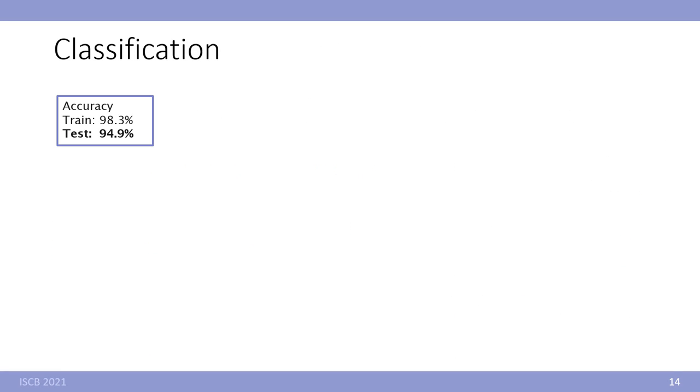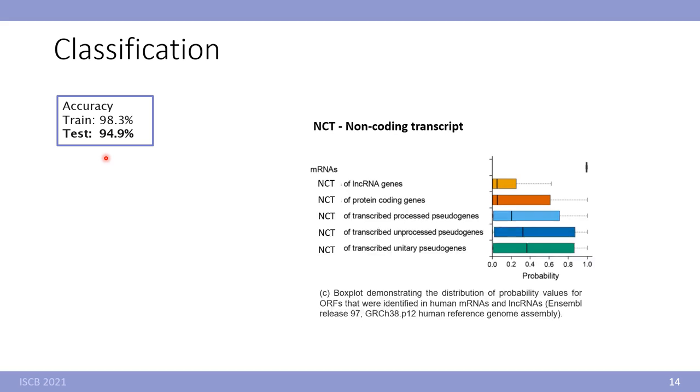For the NCBI database our train set we got accuracy 94.9%. This figure is demonstrating the distributions of probability values obtained from our model for different transcripts. The closer to 1 the more likely that the candidate is coding. As you can see distribution for true mRNA molecules is around 1.